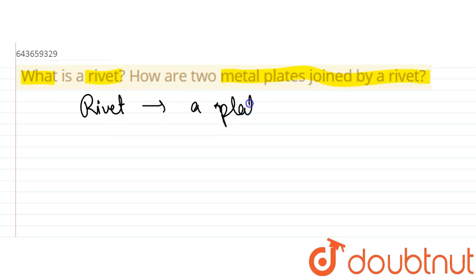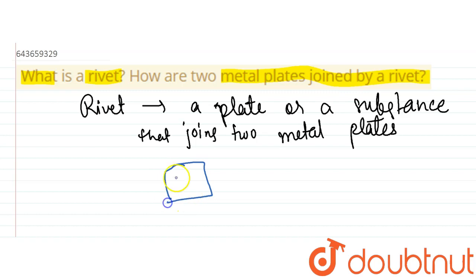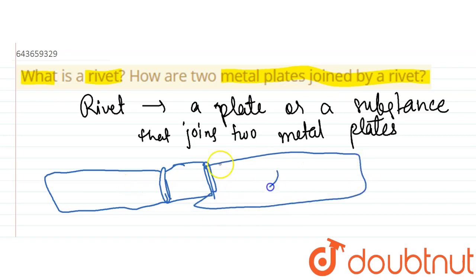A rivet is a plate or substance that joins two metal plates. First, the rivet is heated. When it expands, one plate is fixed over it and another plate is fixed, and they are joined together. This is how a rivet helps us join two metals — metal one and metal two.